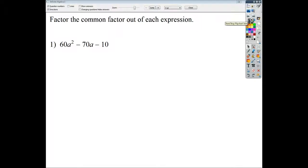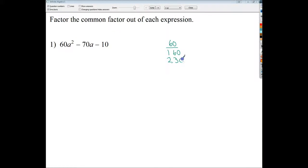So, I want to factor out the common factor of each expression. I need to see what number all of the coefficients have in common. And I can do that by doing a factor list for them if I want. So, I need to do for 60: 1 and 60, 2 and 30, 3 and 20, 4 and 15, 6 and 10. For 70: 1 and 70, 2 and 35, 3 I'm pretty sure doesn't work, 4 doesn't work. 70 divided by 5 is 14.